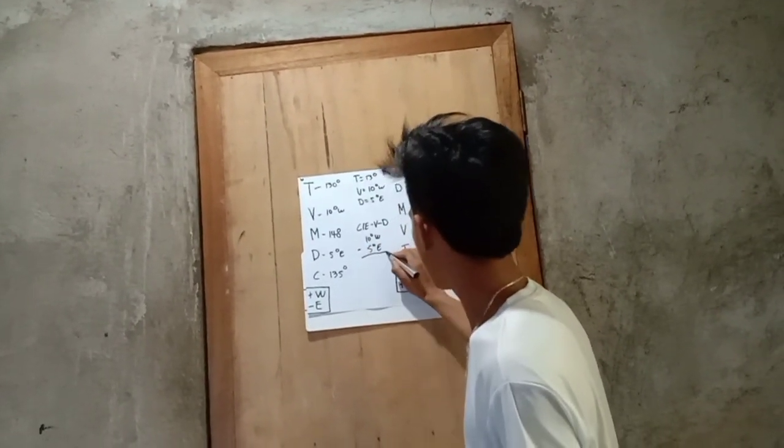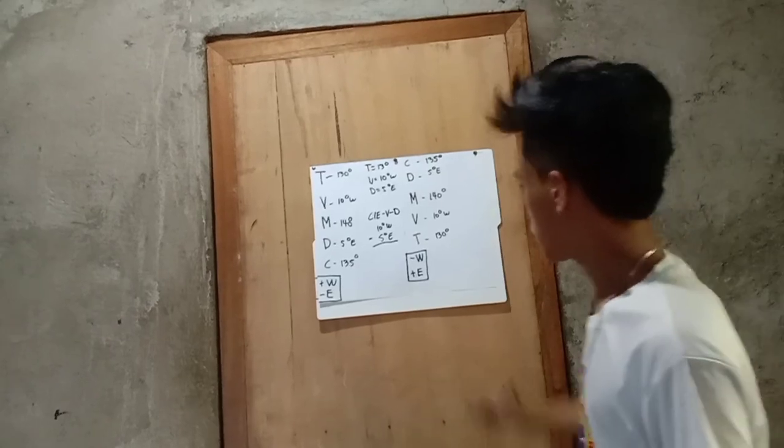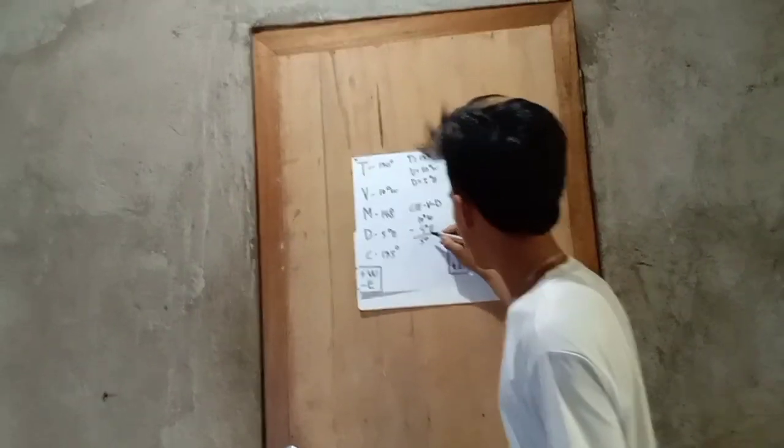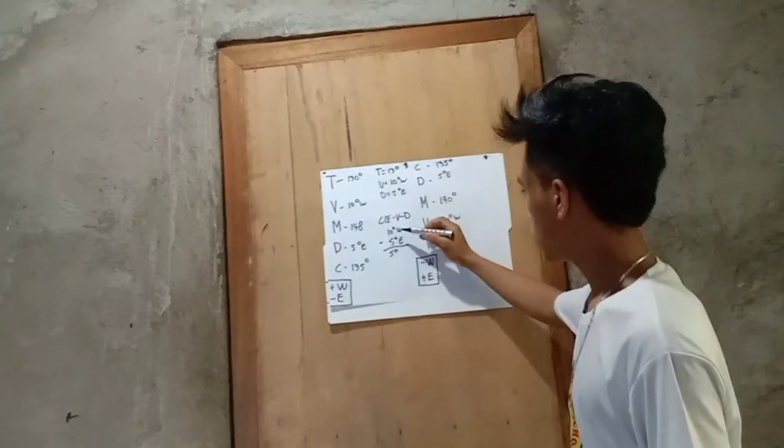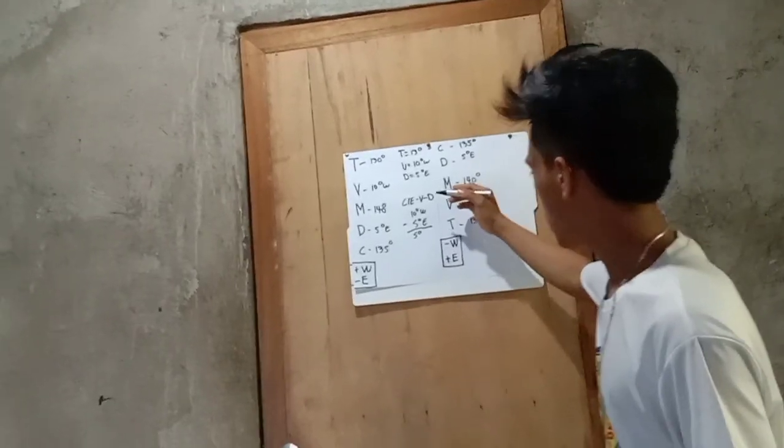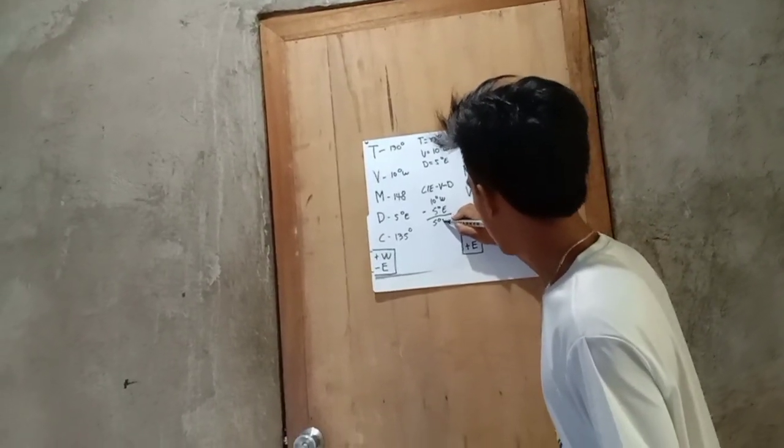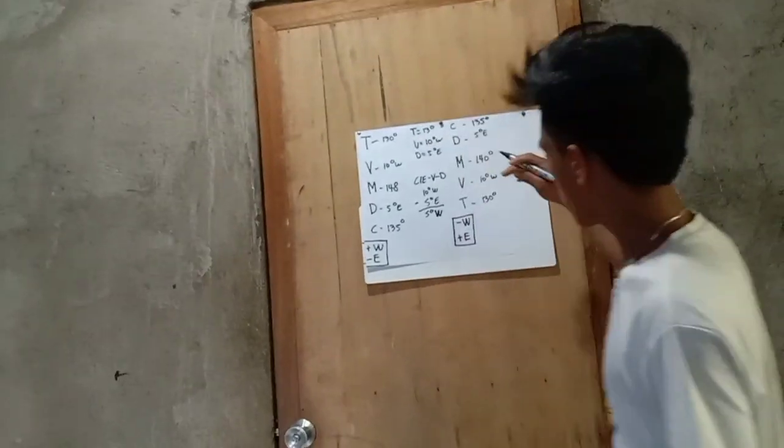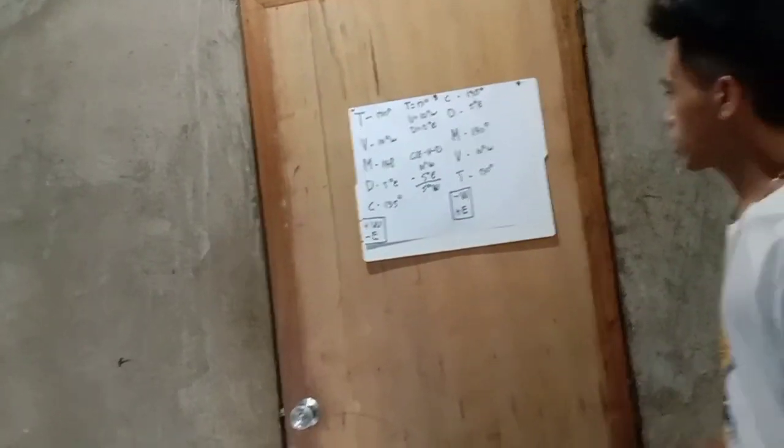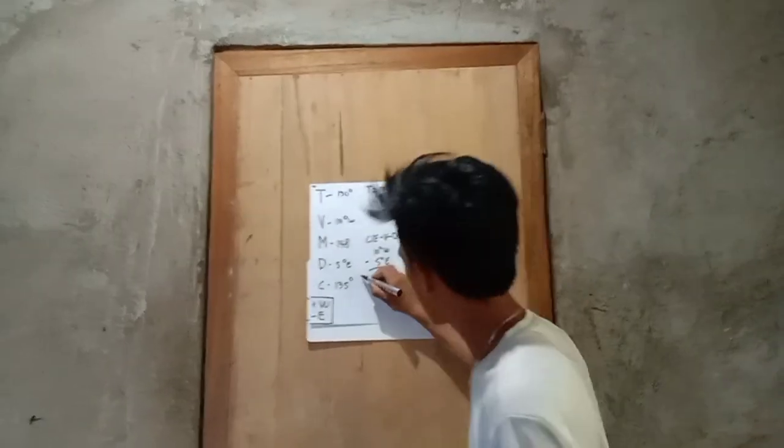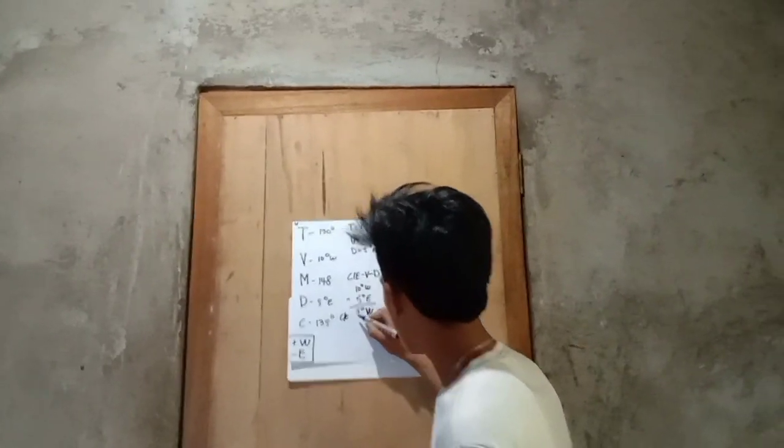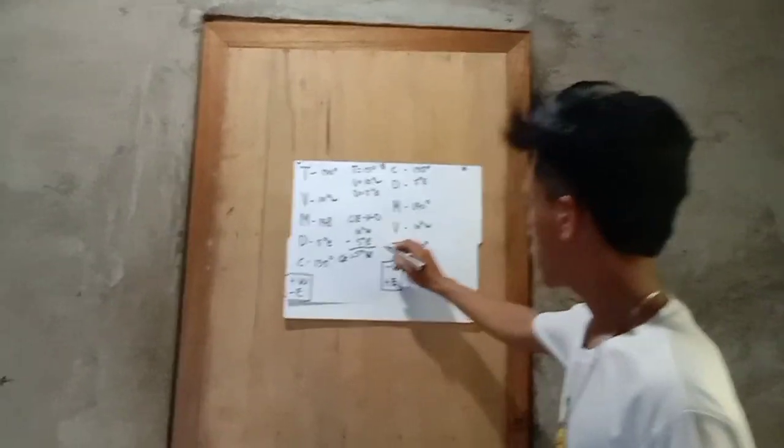So, subtract equals 5 degrees. If the bigger number... copy the... is west, which is 5 degrees is our compass error, 5 degrees west.